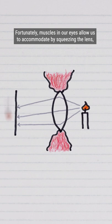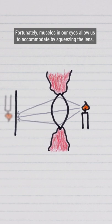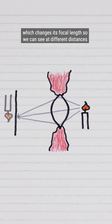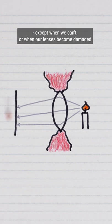Fortunately, muscles in our eyes allow us to accommodate by squeezing the lens, which changes its focal length so we can see at different distances, except when we can't, or when our lenses become damaged, in which case we need glasses.